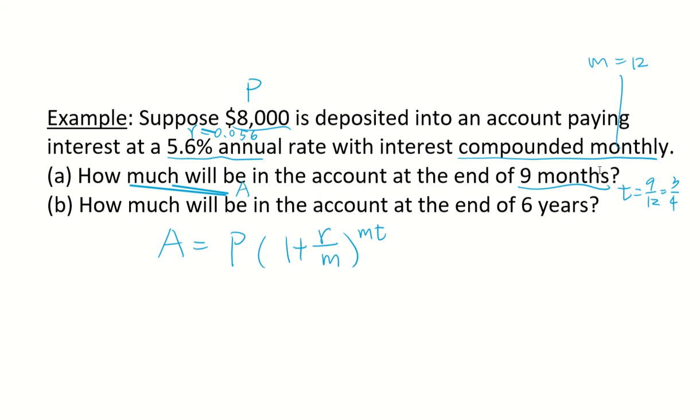Let's plug in the numbers. 8,000 times 1 plus R is 0.056 divided by M is 12. Here M is 12 again times T, 3 over 4.